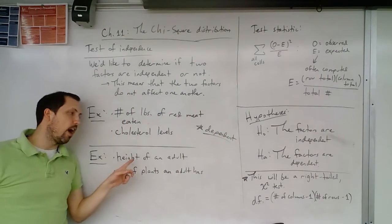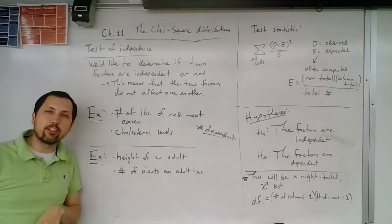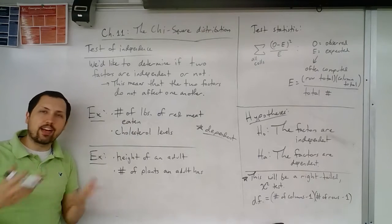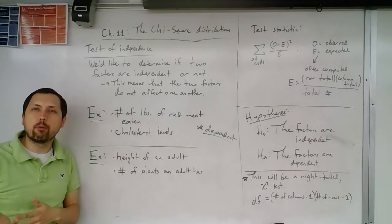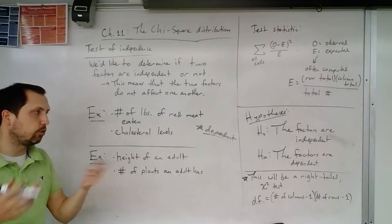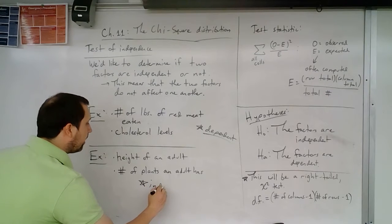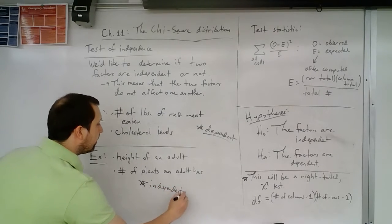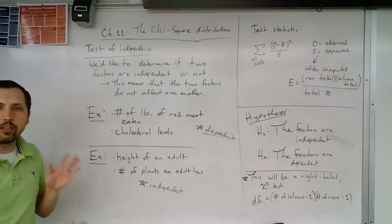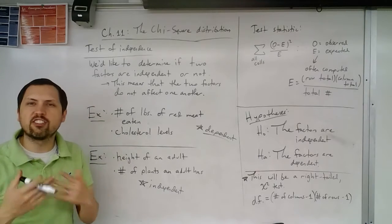On the other hand, this example: height of an adult and the number of plants an adult has, do one of these affect one another? Well, I don't think so. It's not like tall people own more houseplants than short people do. So this one would be an example where they are independent. Basically nothing going on between these two. Nothing's causing another one, nothing's affecting one another.